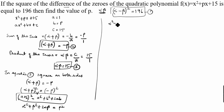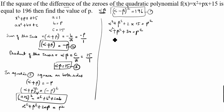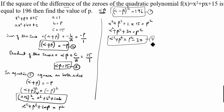So alpha² + beta² + 2(15) = p², which gives alpha² + beta² = p² − 30. This is the fourth equation.